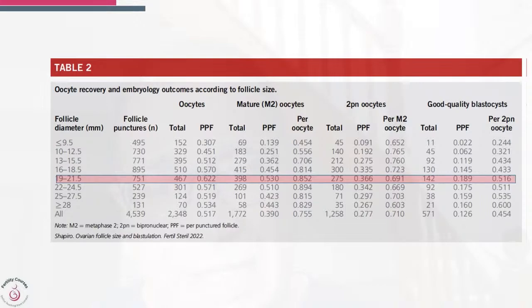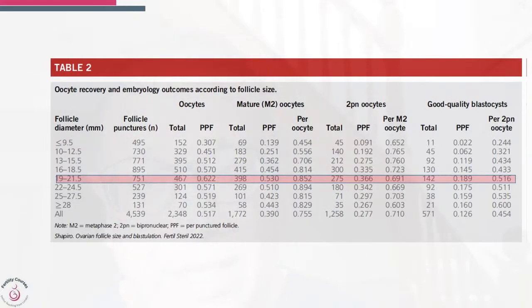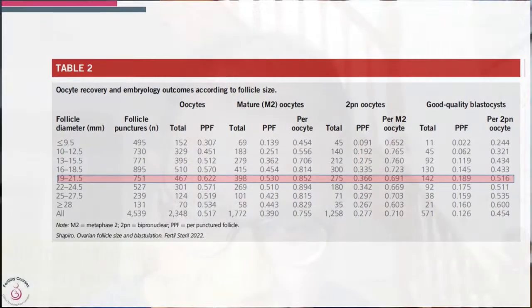If your follicle size increases, you did not see a substantial drop in the blastocyst conversion rate. Also, in smaller follicles, as long as you obtained metaphase 2 oocytes, you could achieve blastocyst culture.